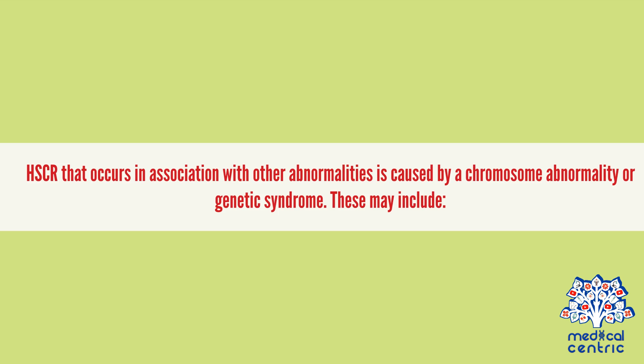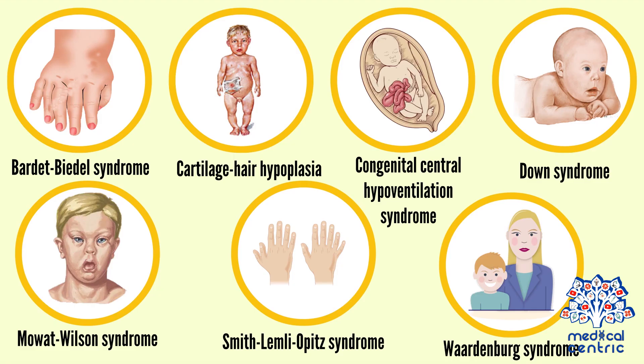HSCR that occurs in association with other abnormalities is caused by a chromosome abnormality or genetic syndrome. These may include Bardet-Biedl syndrome, cartilage-hair hypoplasia, congenital central hypoventilation isolation syndrome, Down syndrome – people with Down syndrome are at a greater risk – Mowat-Wilson syndrome, Smith-Lemli-Opitz syndrome, and Waardenburg syndrome.